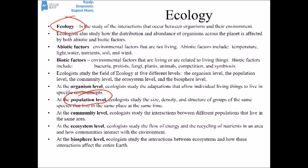The community level is the next level. Here, scientists study the interactions between different populations that live in the same area or the same habitat. Next, we've got the ecosystem level. These ecologists study ecosystems, which are the communities that live in a place and how those communities interact with the environment. Ecosystem ecologists often look at how energy flows through a system and how matter or nutrients are recycled through that ecosystem.